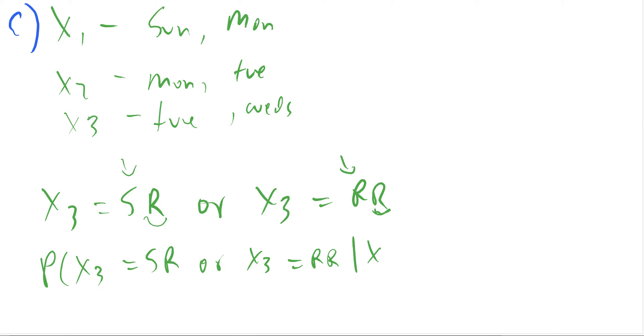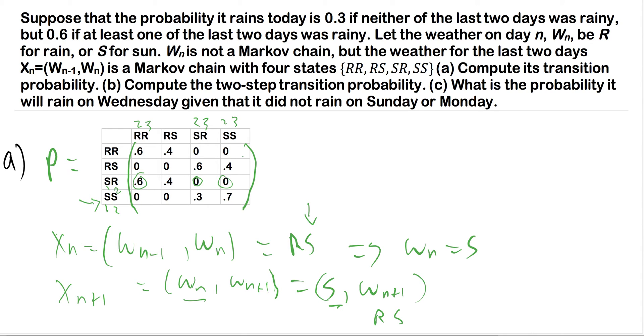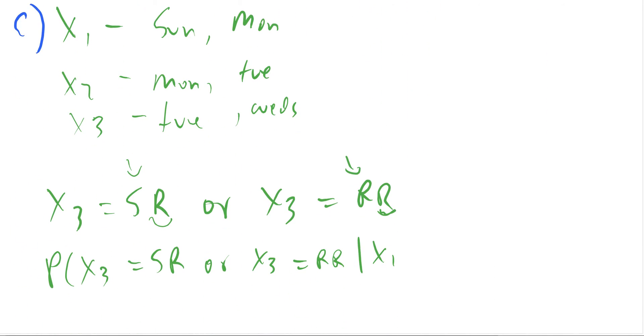So what we're trying to find is the probability that X3 equals SR or X3 equals two days of rain, given that X1... Here they're saying it did not rain Sunday or Monday. So therefore, Sunday or Monday has to be sunny sunny, which is X1 like we said above.